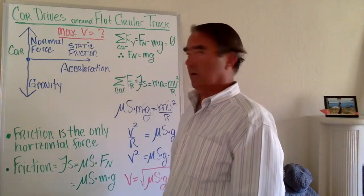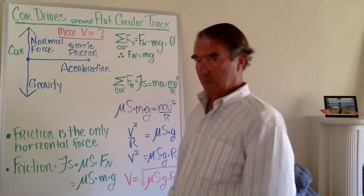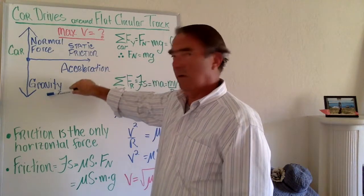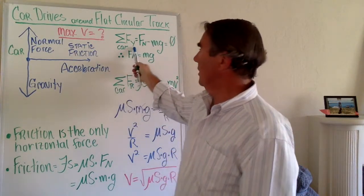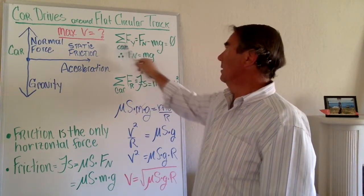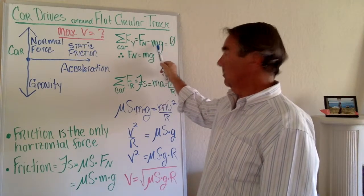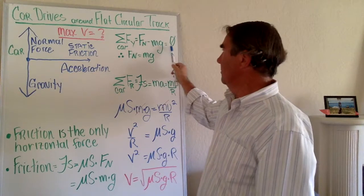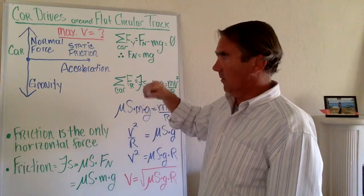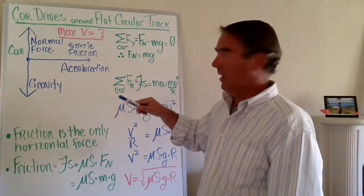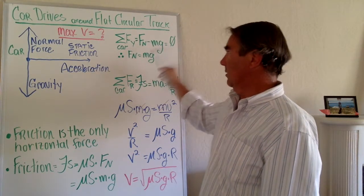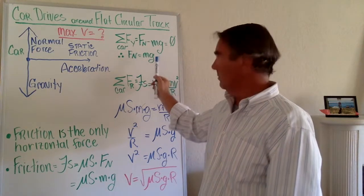This free body diagram illustrates the problem. There are only three forces at play. Vertically, the forces are the normal force and gravity. The sum of vertical forces gives: normal force minus mg equals zero, meaning the normal force is equal to mg.